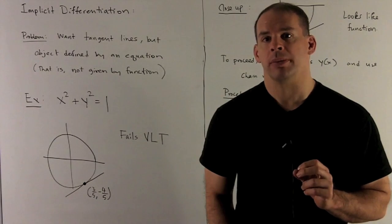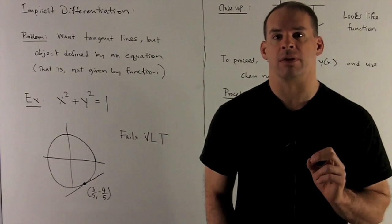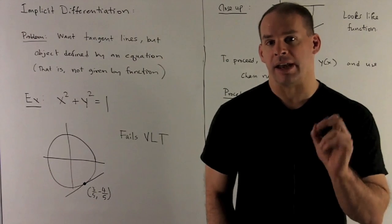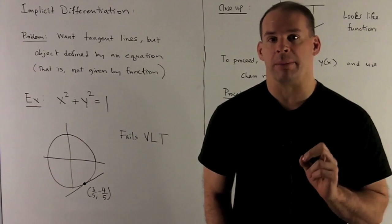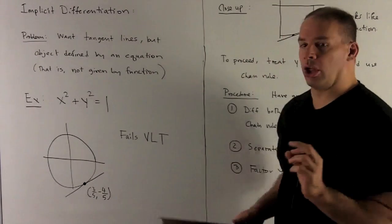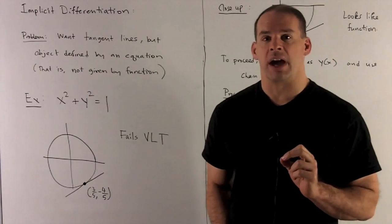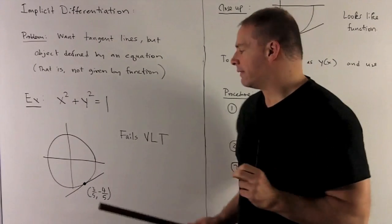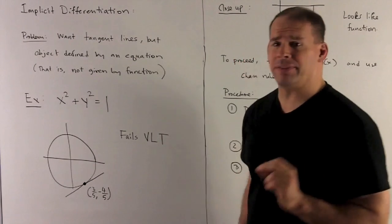As an application of the chain rule, let's consider implicit differentiation. In calculus, not every object of interest is going to be defined by a function. For instance, take the unit circle - you'll notice this is not defined by a function because it fails the vertical line test.